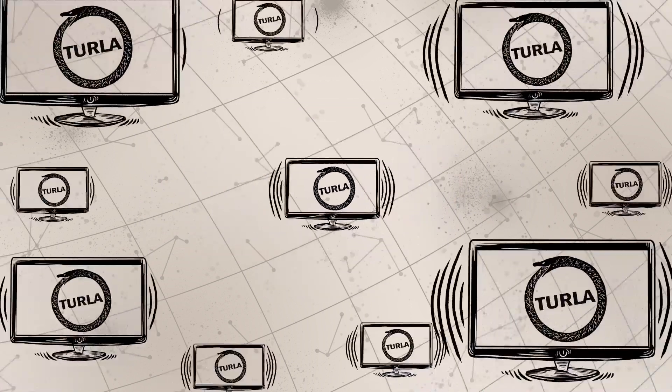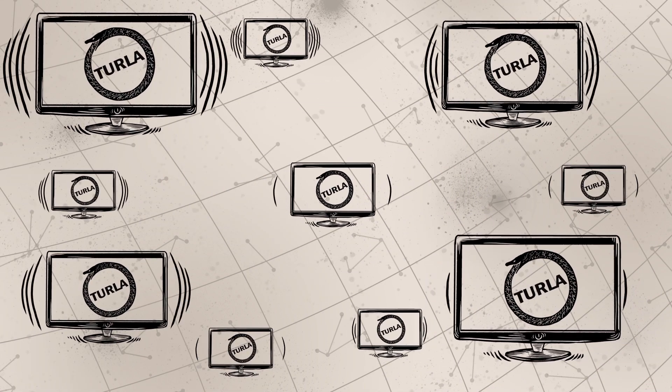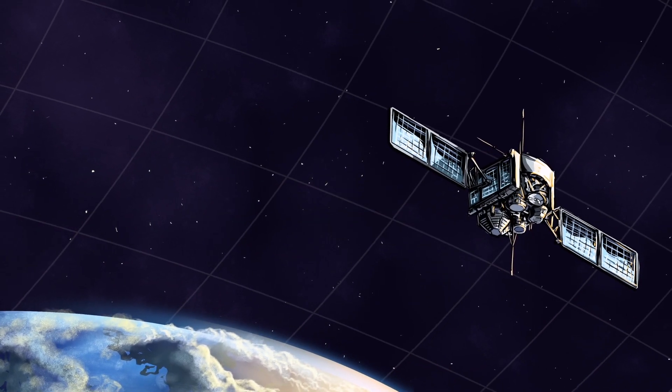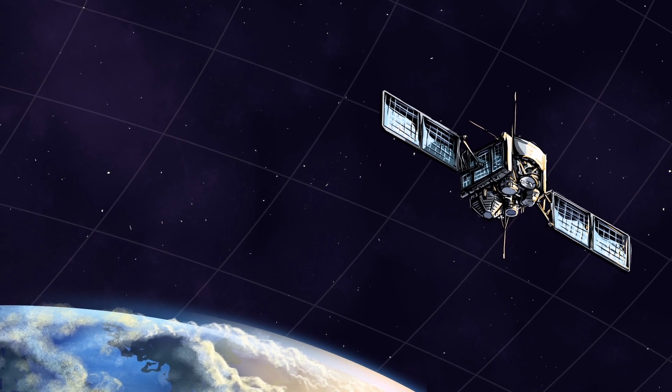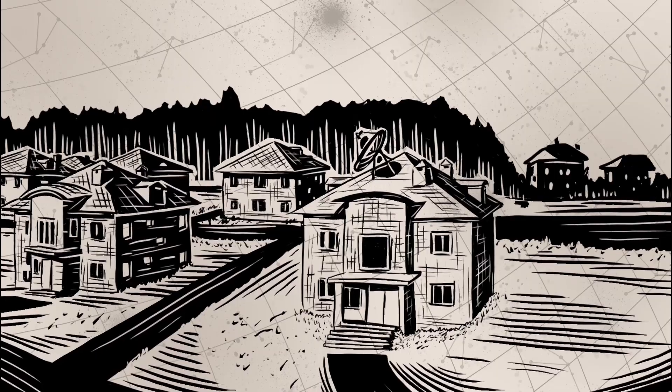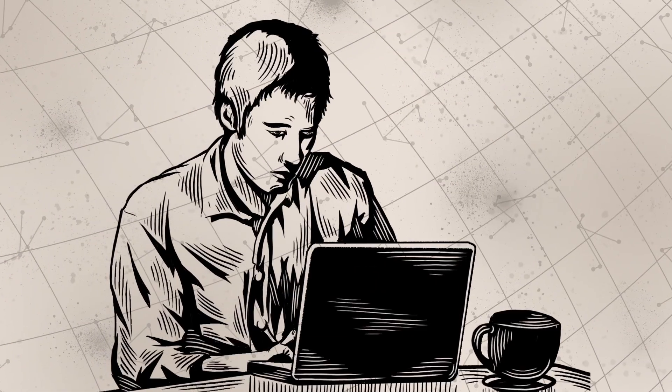This is possible if you use a one-way satellite internet connection. Such connections are sometimes used to provide internet access to places where high-speed internet is not usually available. When you press download or enter a URL using your web browser,